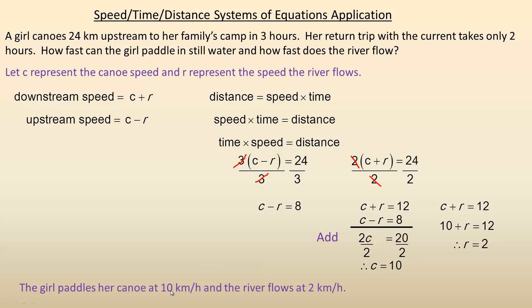So the girl paddles her canoe at 10 kilometers per hour in still water, not going against or with a current. And the river flows at 2 kilometers per hour. That is the end of the example.